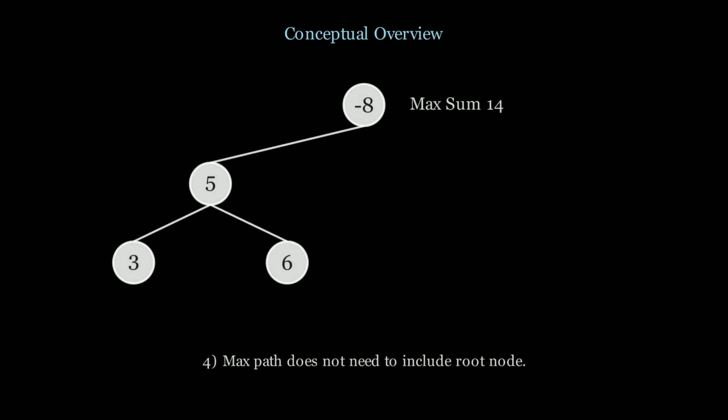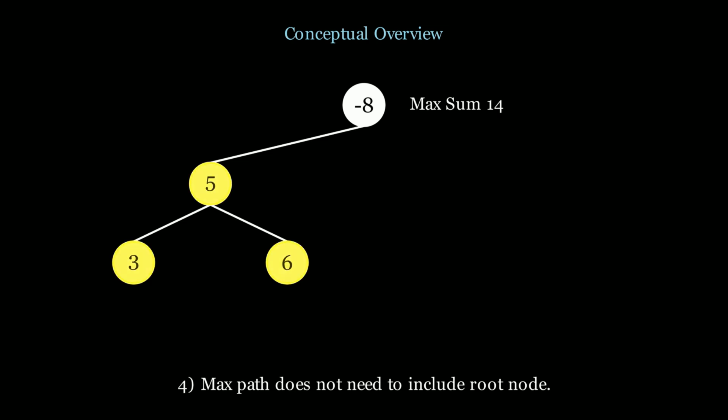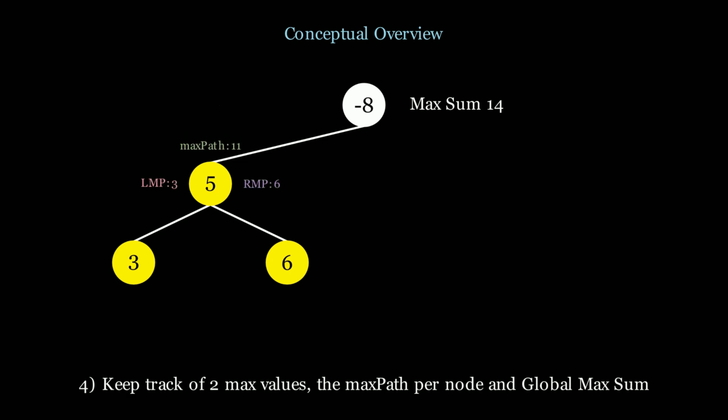In the last example, what do we do when it's not beneficial to take the root node? The maximum sum is 5 plus 3 plus 6. We're going to have to keep track of the maximum path as if the current node were the root. This gives us the benefit of taking both the left and right max paths, not just one of them. This means in the algorithm we need to keep track of two maximum values: one is the max path at the current node, and the other is a global maximum sum where we consider the current node as if it were the root.